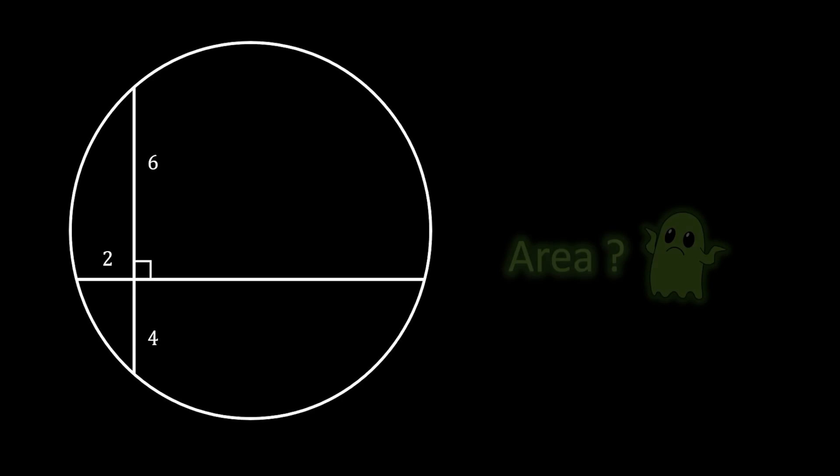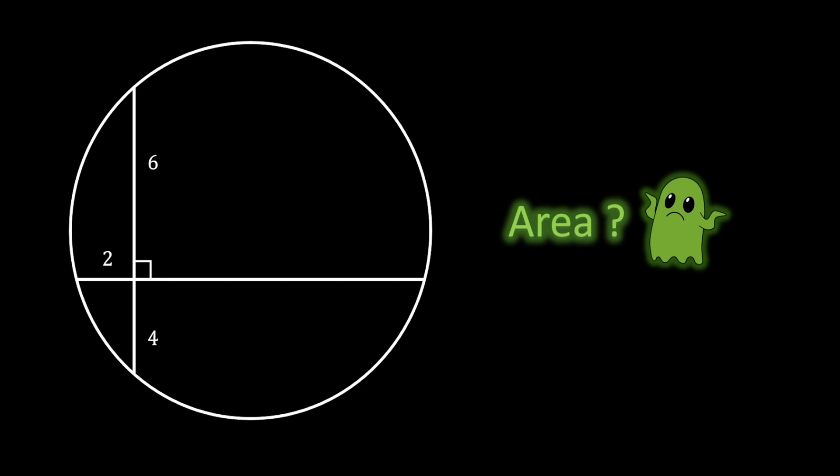Let's start with a circle with two perpendicular intersecting chords. The lengths of the segments of these two chords have values of 2, 4, and 6. Can you find the area of this circle?